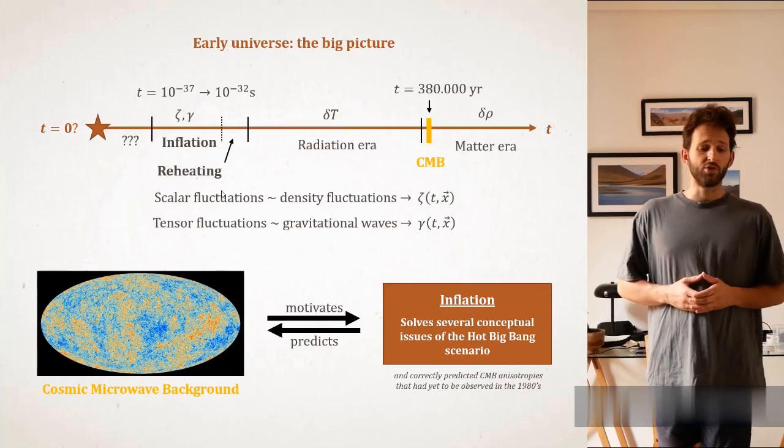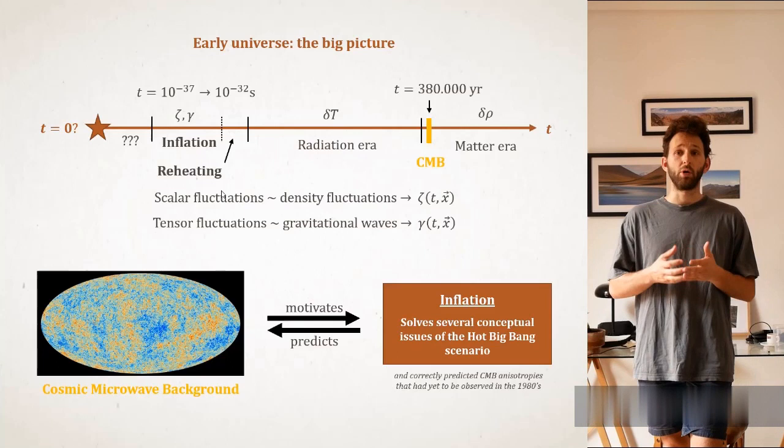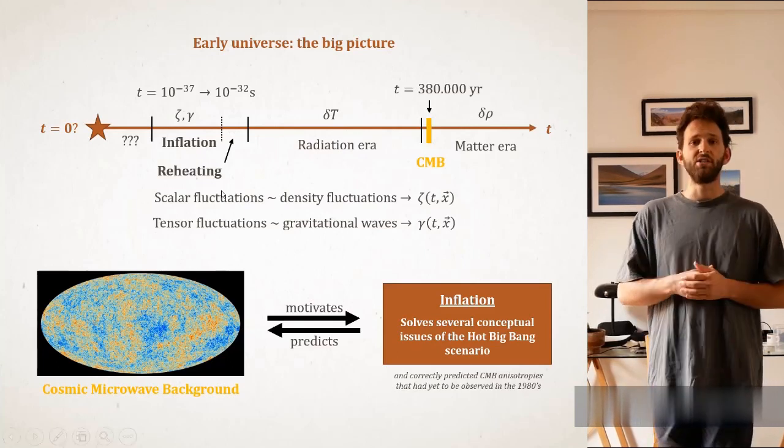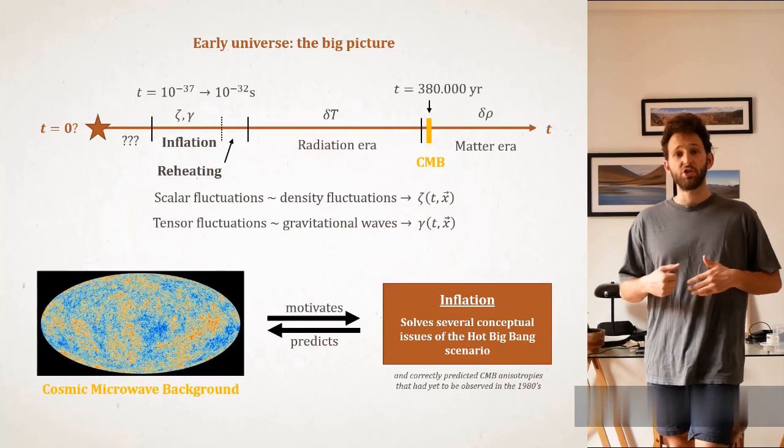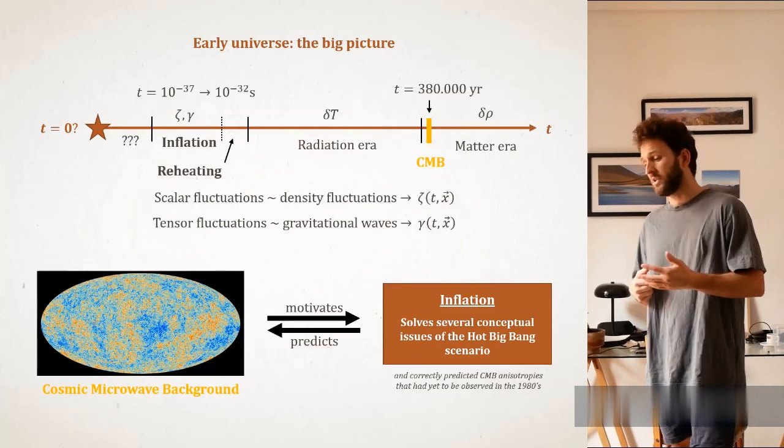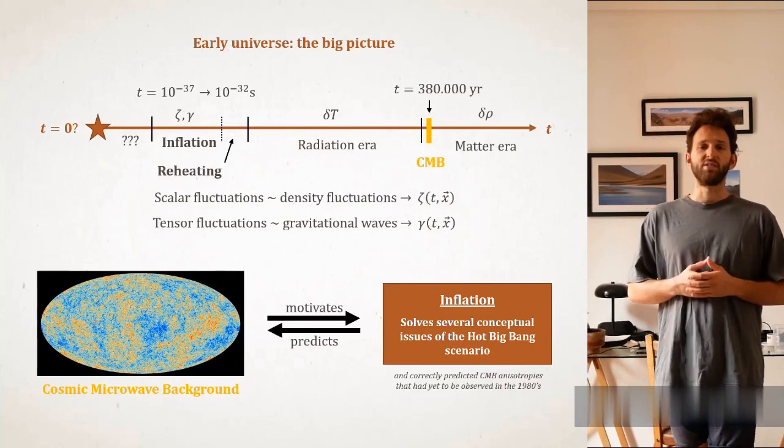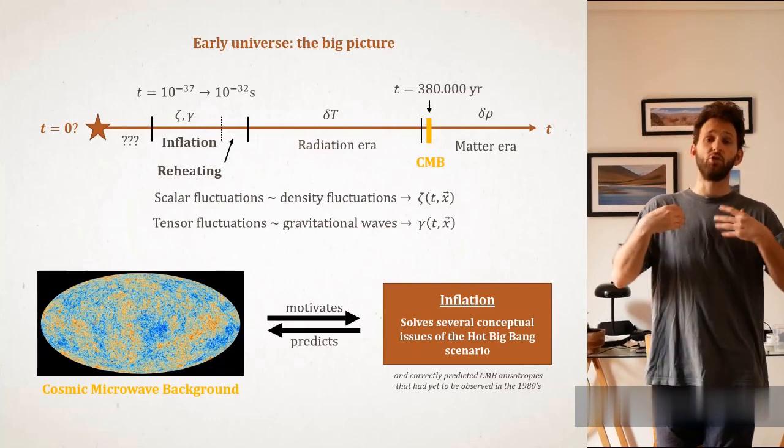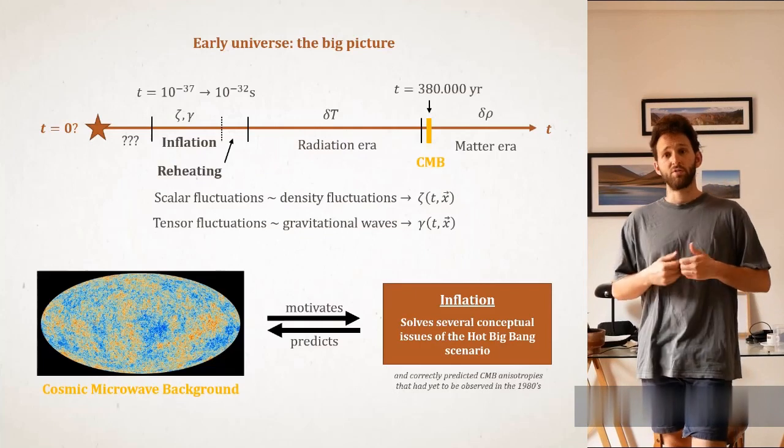Importantly, cosmological inflation was introduced in order to solve the puzzles of the hot big bang model, one of which being the observed homogeneity of the universe at the time of the emission of the CMB. In return, inflation has enabled us to predict the statistics of the small inhomogeneities imprinted on top of this homogeneous background with very high accuracy.